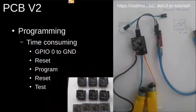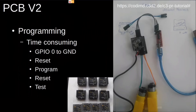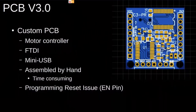Version 2 had one big drawback: programming was complex. You had to disconnect power, pull GPIO0 to ground, reset, program, reset again, and test — a lot of unplugging and replugging, which is very annoying especially in a workshop. Developer boards are simpler: you just plug in USB and say 'program,' it resets automatically, programs, and restarts automatically. That's a feature you just want — no manual unplugging or connecting to ground. So we moved to version 3.0.